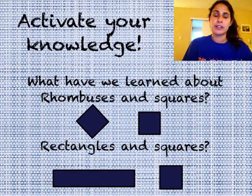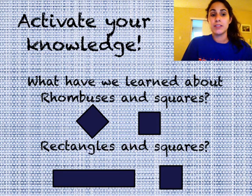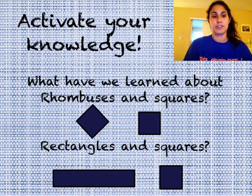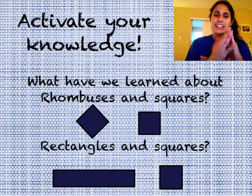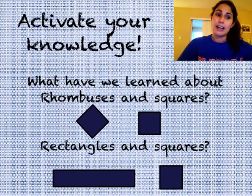Remember that when you were classifying rhombuses and squares, we discovered that a square is a rhombus because it has four equal sides and it has four right angles.